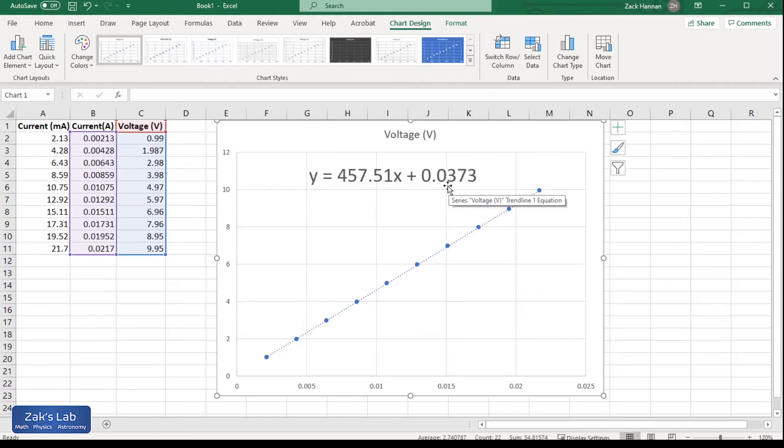And my best fit line I can see almost has a y-intercept of zero—I'm not expecting that to be perfect—and my slope is 457 and a half. And I'll just go ahead and round that to 458, just keeping three sig figs. Finally I want to do a comparison between the resistance I got from the best fit line, so 458 ohms, and the resistance I got from the multimeter, 462 ohms.